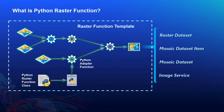You can create a raster function template that combines built-in raster functions and a custom Python raster function to create even more complex analytic workflows. In a raster function template, you can insert a Python adapter function into the function chain for capabilities not offered by the built-in system functions. To create the Python adapter function, you specify the Python raster function class Python file. With this function template, you can use it with raster datasets, mosaic dataset items, mosaic datasets, or image services, just like any other raster function template.